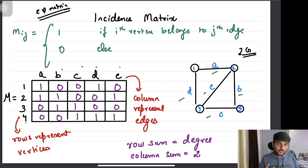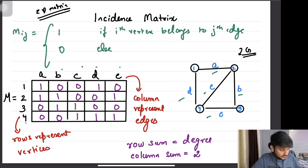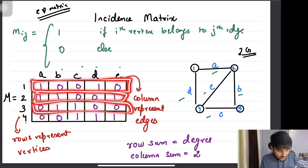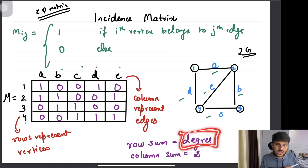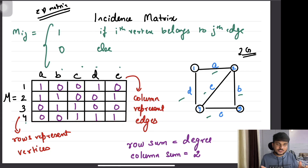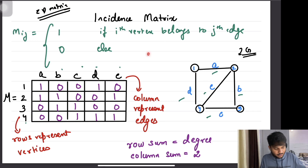An interesting property of the incidence matrix is that the sum of each column is always equal to 2, because one column represents one edge and one edge is associated with exactly two vertices. Additionally, the sum of each row equals the degree of that vertex. Here vertex 4 is associated with three edges, so its degree is 3 and the row sum is 3. So the row sum gives you the degree, and the column sum is always 2.